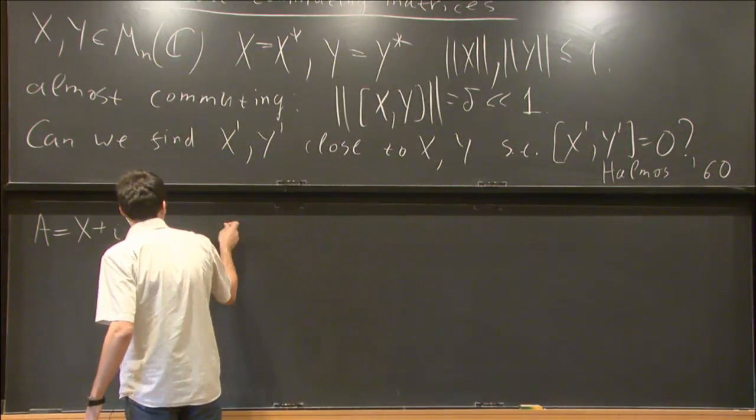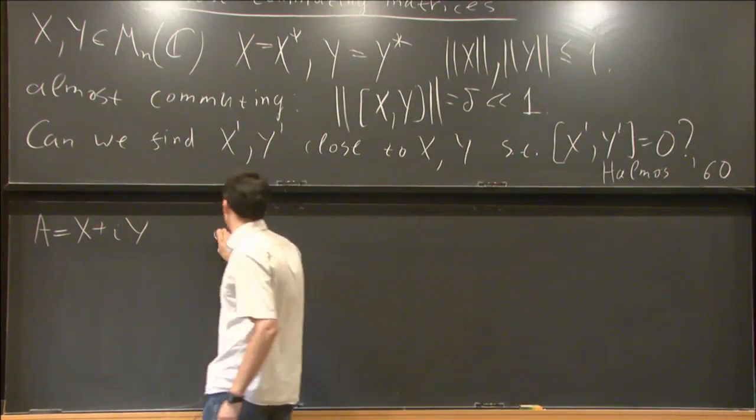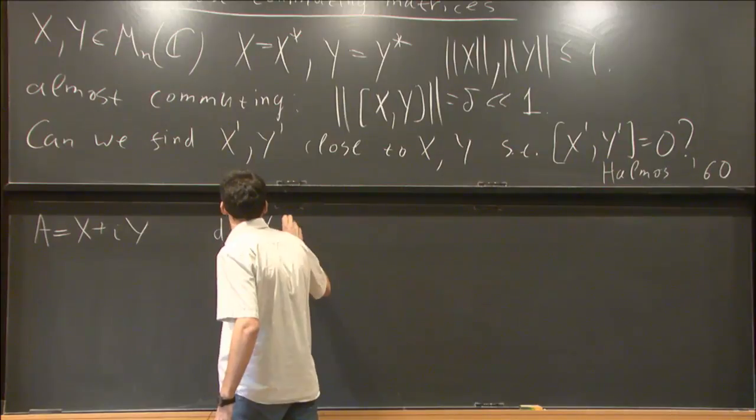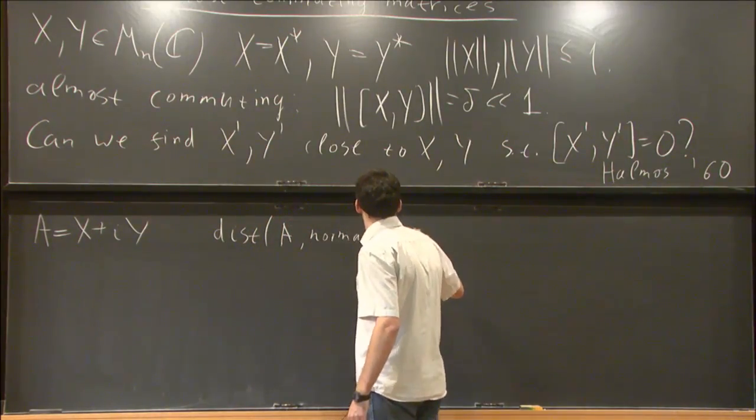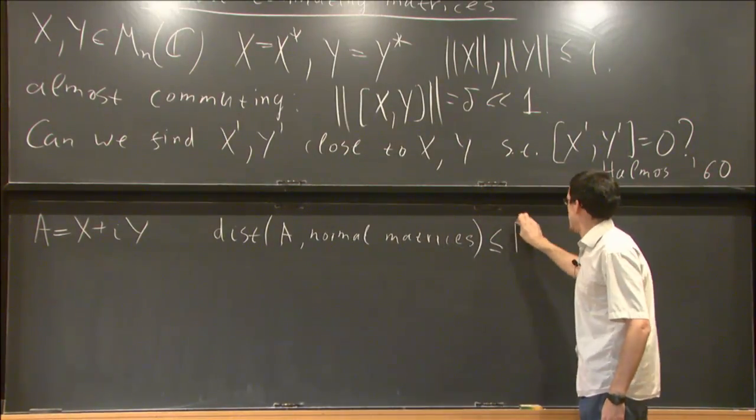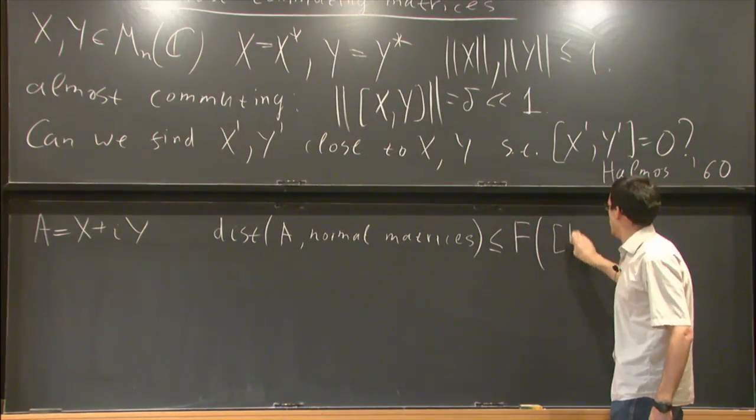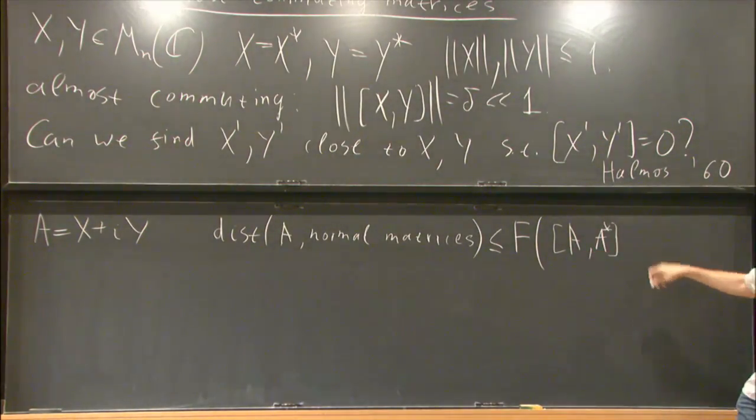So you can formulate it like this: can we estimate the distance from A to normal matrices, bounded by some function of the norm of the self-commutator?